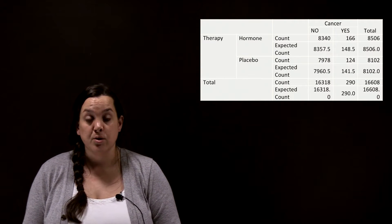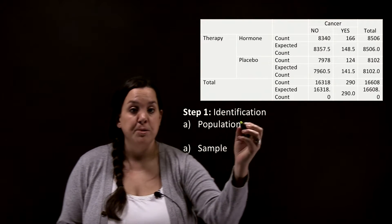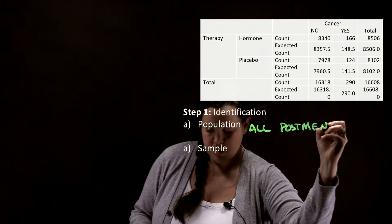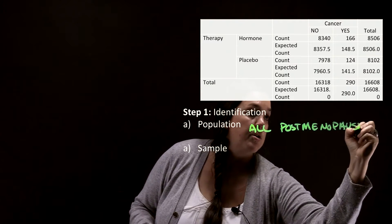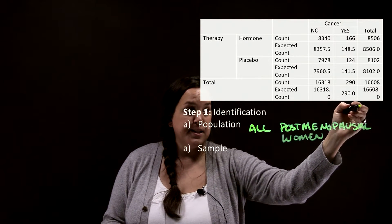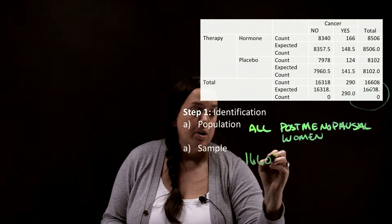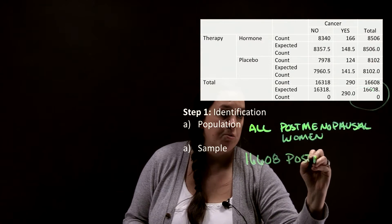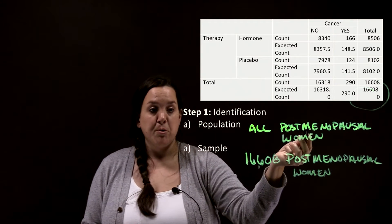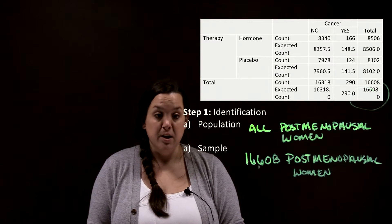They decided in 2002 to halt this study, and we're going to see if that was an accurate decision. When you start, you'll first identify the population. Here our population is going to be all postmenopausal women — that is the group we're trying to make an inference on. We're basing that on a sample of sixteen thousand six hundred and eight postmenopausal women included in the study.